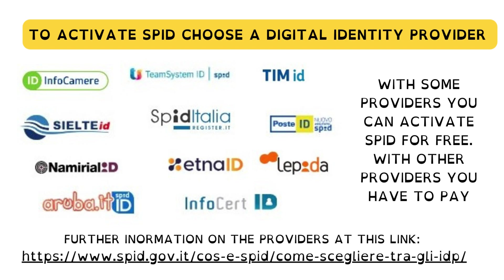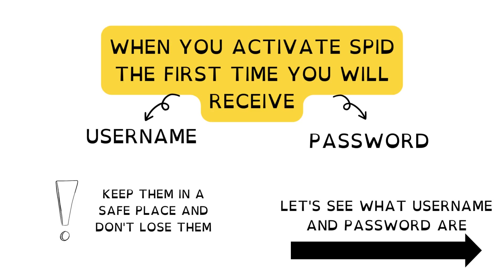To activate speed, choose a digital identity provider. With some providers you can activate speed for free; with other providers you have to pay. Further information on the providers is available at this link. When you activate speed for the first time, you will receive a username and password. Keep them in a safe place and don't lose them.